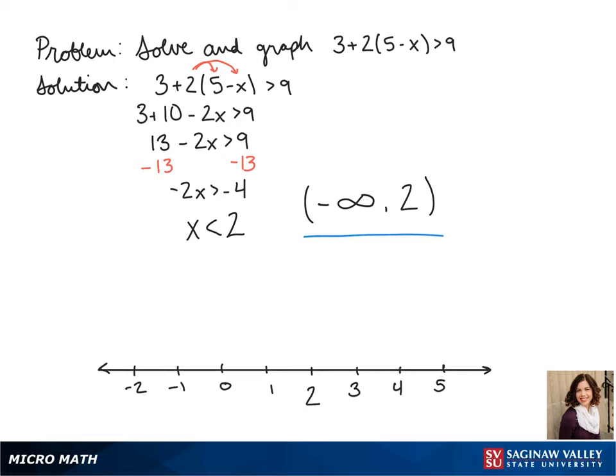Now to graph this equation, we want to put an open circle at 2 because again, it's not included. And it's anything smaller, so our arrow goes to the left.